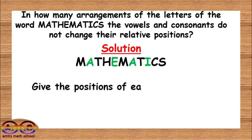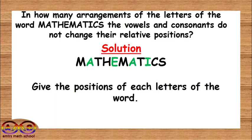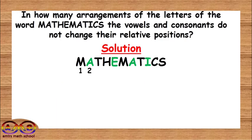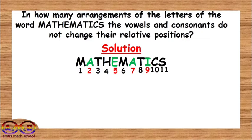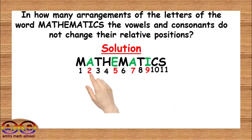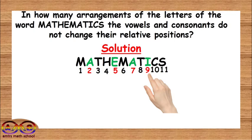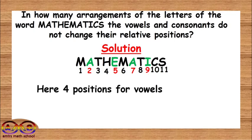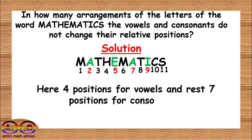First, give the position of each letter of the word: 1, 2, 3, 4, 5, 6, 7, 8, 9, 10, 11, and identify the positions of the vowels. Here the vowels are in positions 2, 5, 7, and 9. So there are 4 positions for vowels and the remaining 7 positions for consonants.